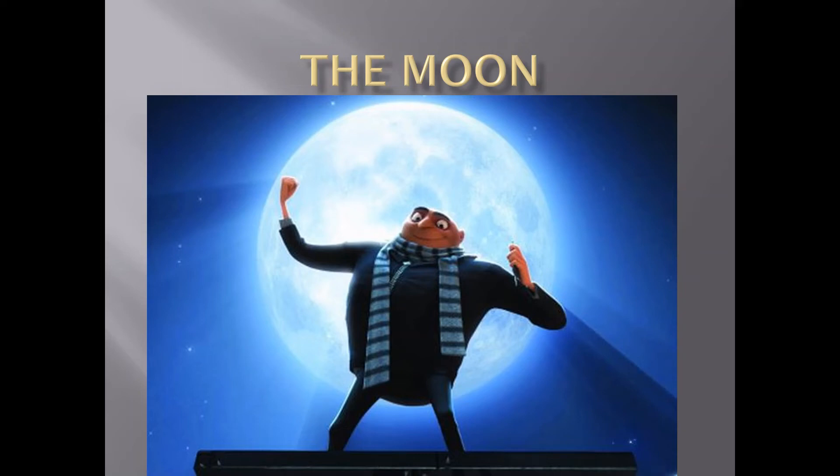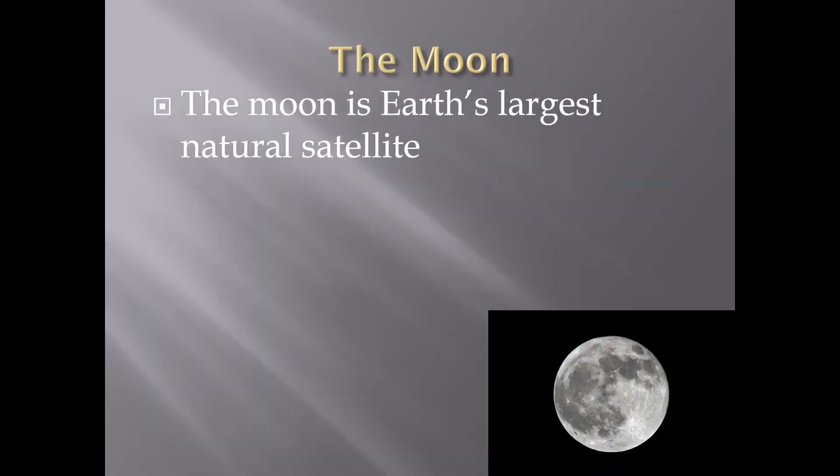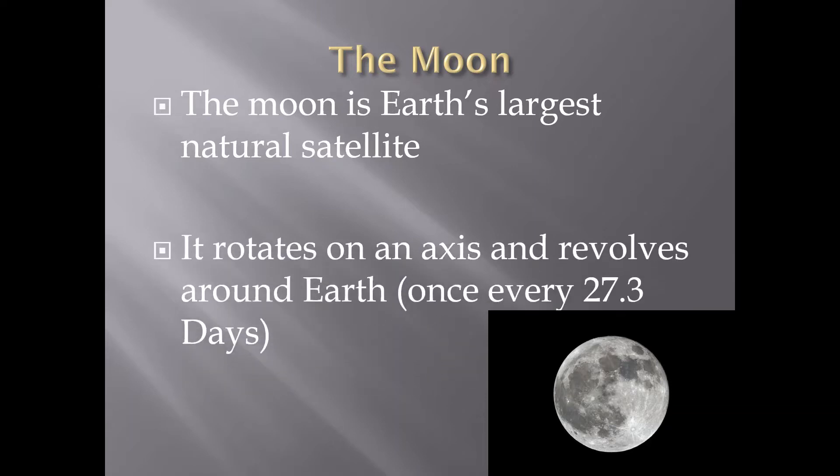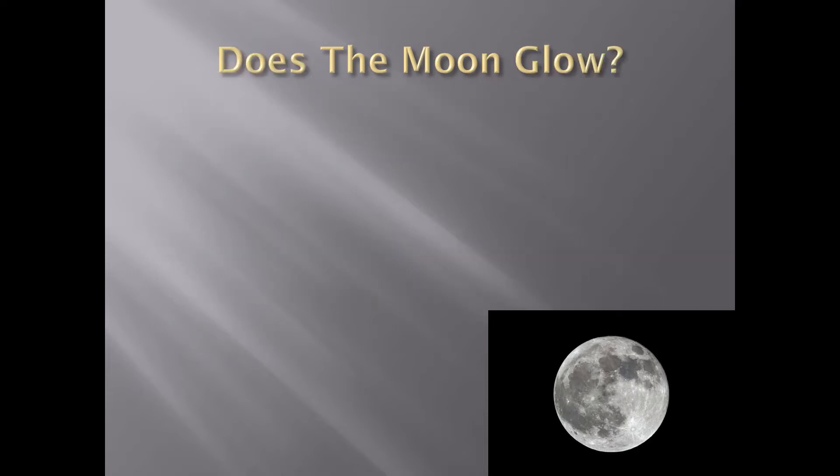Hello, hope you guys are doing well. Let's talk about the moon. So the moon is Earth's largest natural satellite, meaning that it orbits around the Earth. A satellite is any object that orbits something else. The moon is the largest natural satellite. It rotates on its axis and revolves around Earth once every 27.3 days. It takes about 27 days for the moon to get around us on Earth.